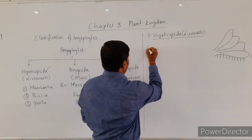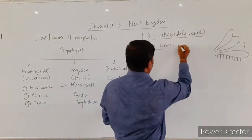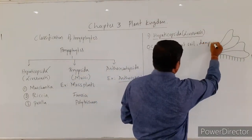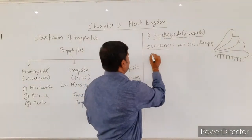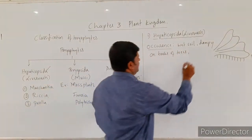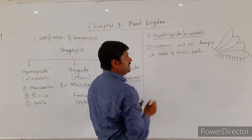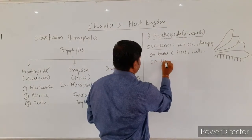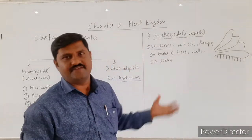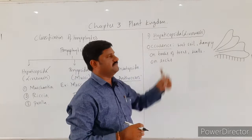Now let us discuss the occurrence of these plants. These plants are growing in wet soil as well as damp places. They also grow on the barks of trees during the rainy season, and even sometimes on walls. Some of these liverworts are growing on rocks — if a little bit of soil is there on the rock, they initiate life there.